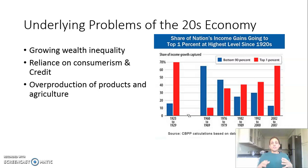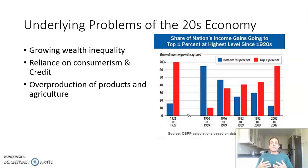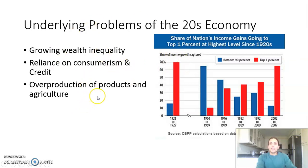The first big thing to understand is that the Depression does not start with the stock market crash of 1929. There are a lot of underlying issues with the 1920s economy that are exploited and come to light after the stock market crash happens in 1929. The first big one I'm going to touch on — there are others we talked about in class, so you might want to look at those as well — is growing wealth inequality.